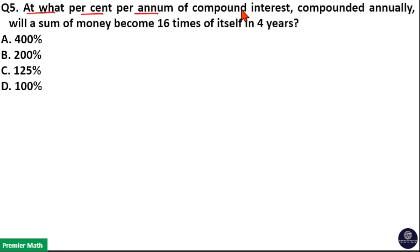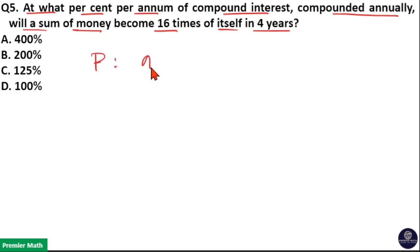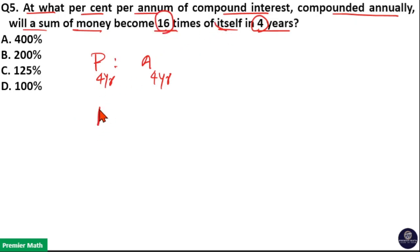At what percentage per annum of compound interest compounded annually will a sum of money become 16 times of itself in 4 years? Take the ratio between principal and amount for 4 years. The sum of money becomes 16 times of itself, so if we take 1 unit as principal, then after 4 years 16 units will be the amount. So the ratio is 1 to 16.